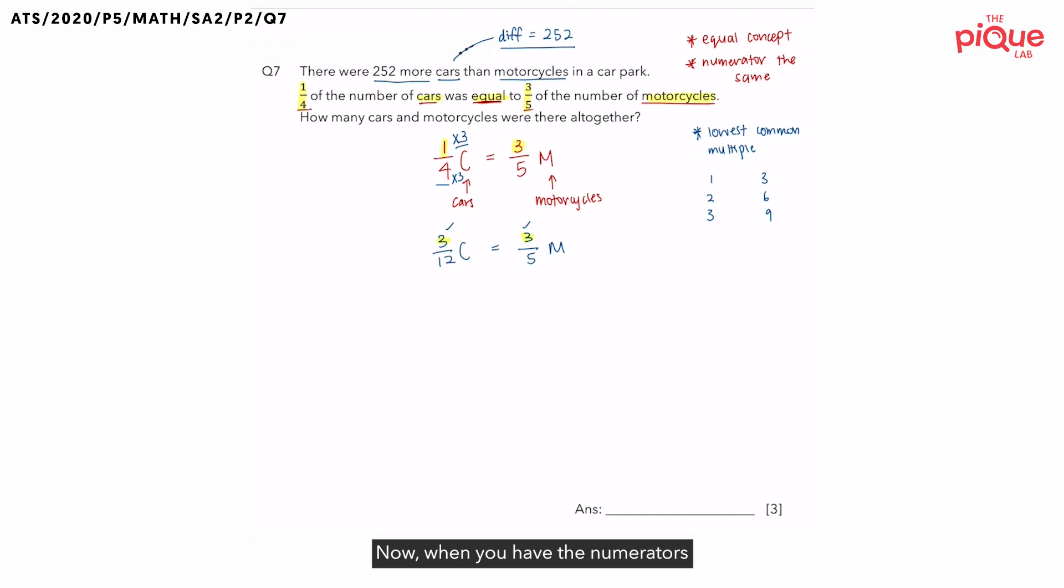Now, when you have the numerators that are equal to each other, remember, the denominator tells you something very important. What does the denominator tell you? The denominator essentially tells you about the total number of units that each of the vehicles have. Okay? So, in this case, let's come up with a summary.